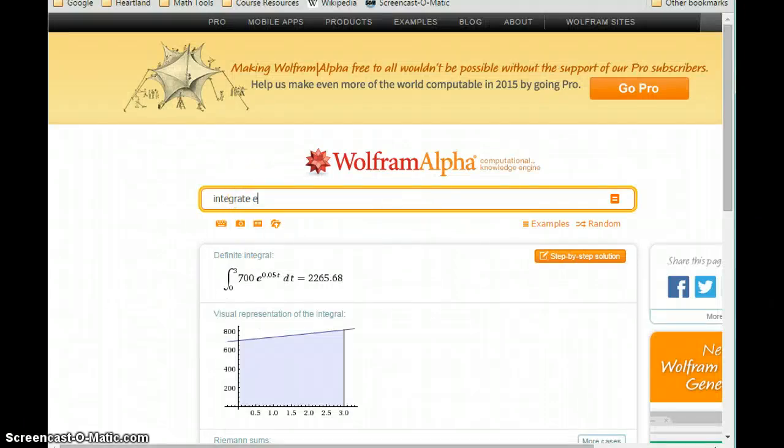So we're integrating e to the 0.069 times 9, times 11,000, times e to the negative 0.069 t, for t equals 0 to 9.